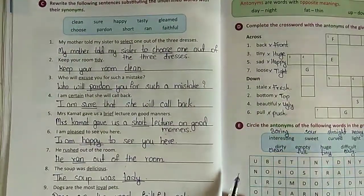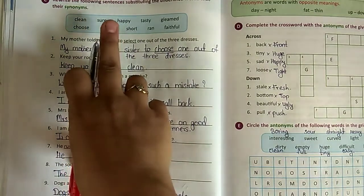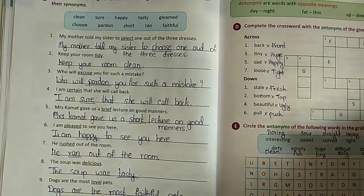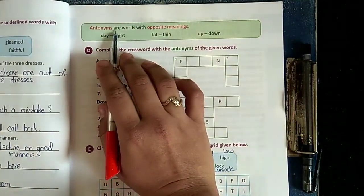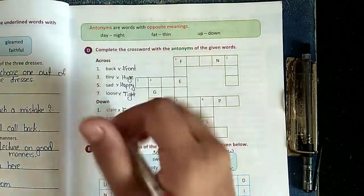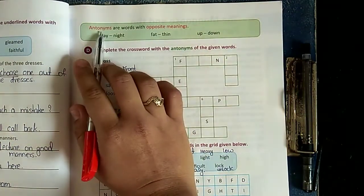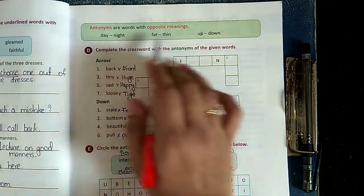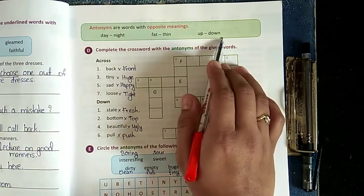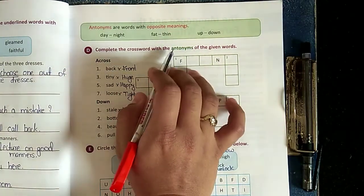Okay, now let's see about antonyms. Antonyms are words with opposite meanings - opposites. So here: day-night, fat-thin, up-down.